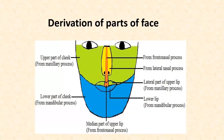The frontonasal process is destined to form the forehead, the bridge of the nose which lodges the spectacles, the nasal septum, the philtrum, and the median part of the upper lip, and the primitive palate which bears the 4 incisor teeth.